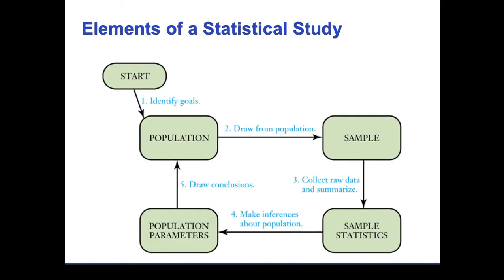This next slide shows the process of setting up a statistical study, and it's very circular. Once you identify your goals, you define your population, draw a sample from that population, collect raw data, make inferences about the population, and draw conclusions. You then compare those conclusions to the population at large and decide whether the study was accurate. If not, you do it again — hopefully getting more accurate each time through the cycle. If your goals are clearly identified from the start, you can probably do this in one cycle.